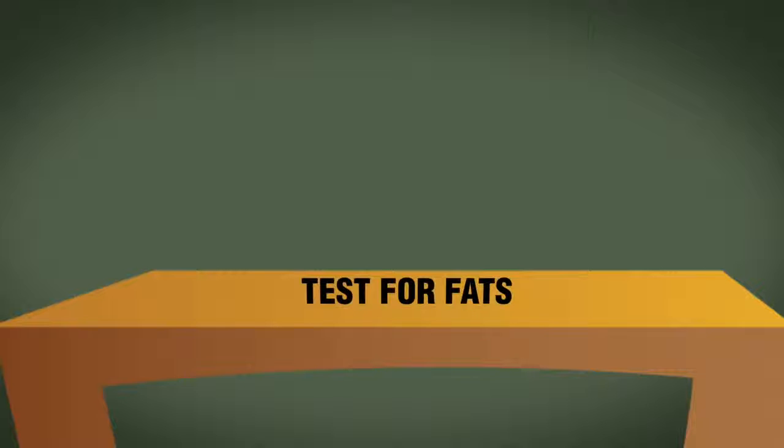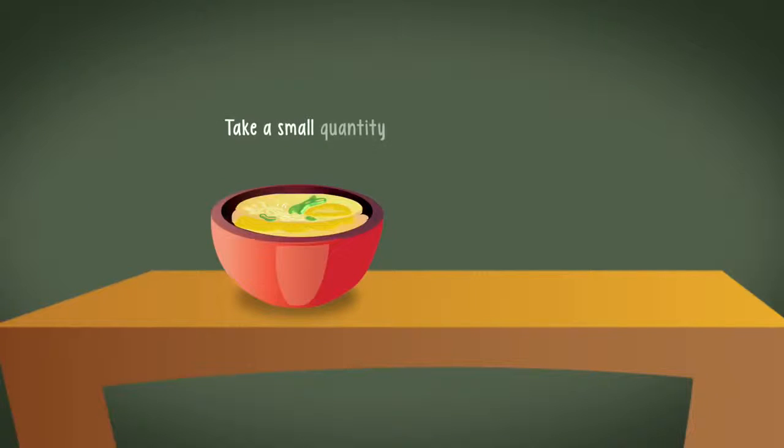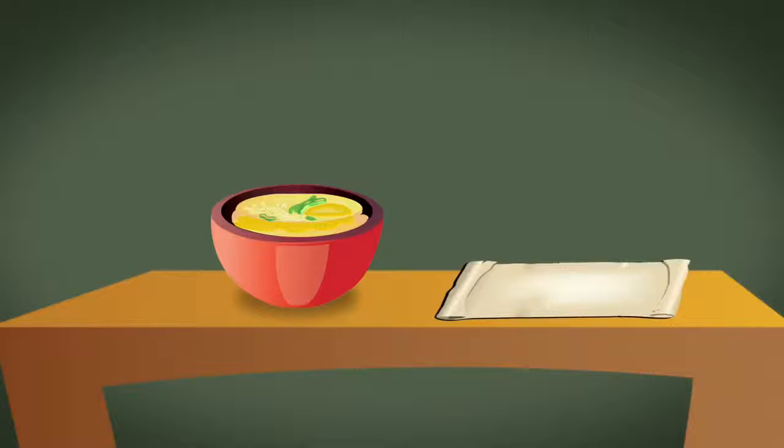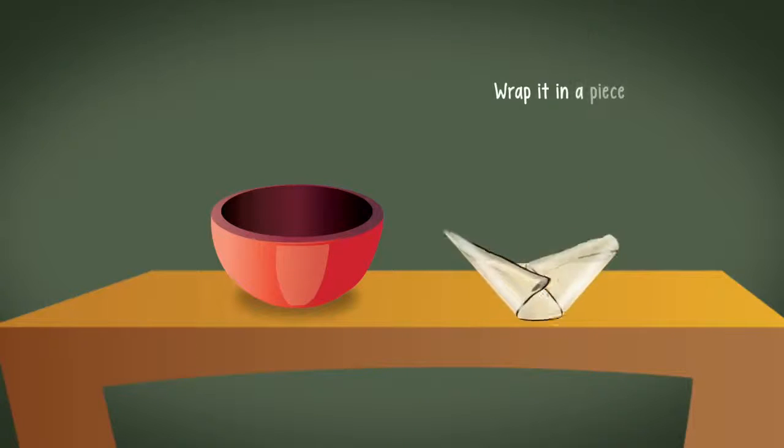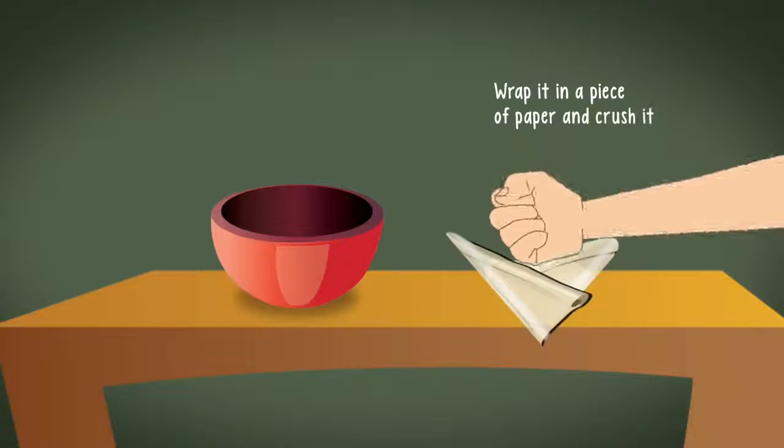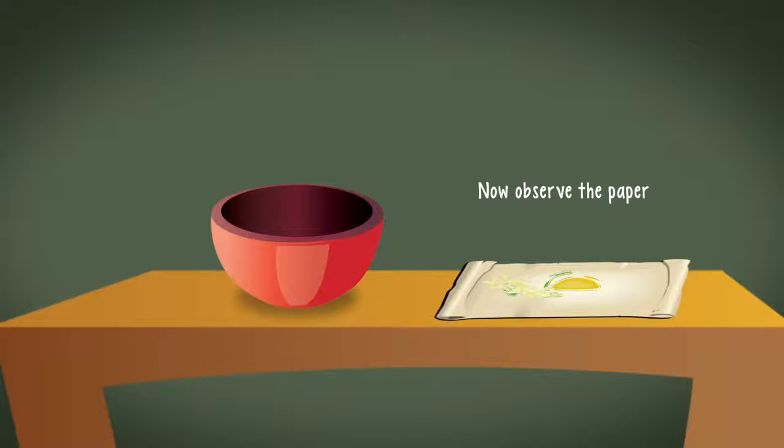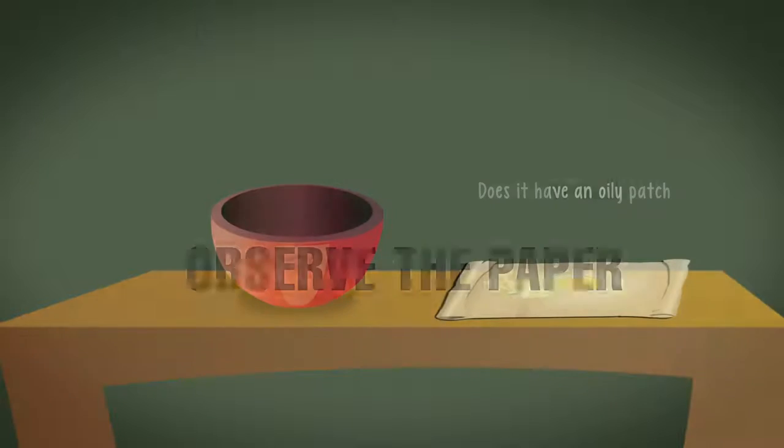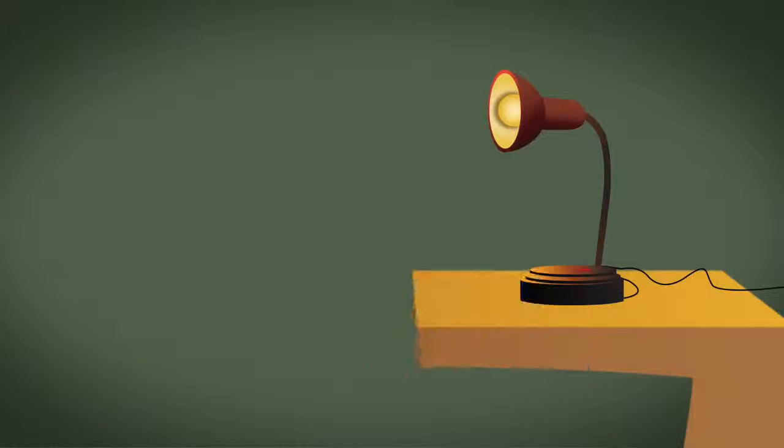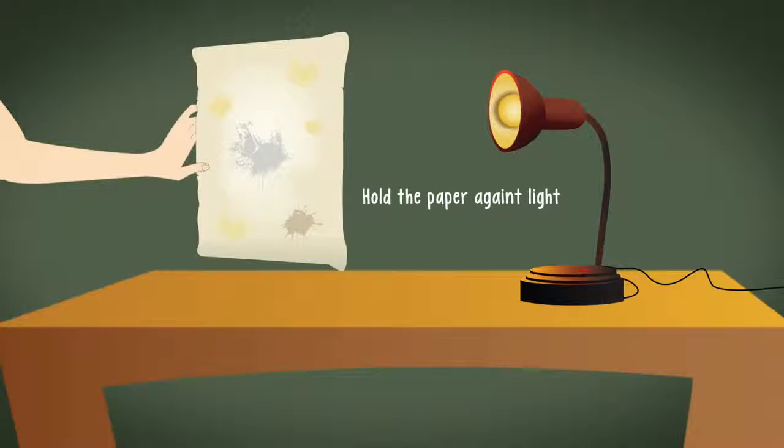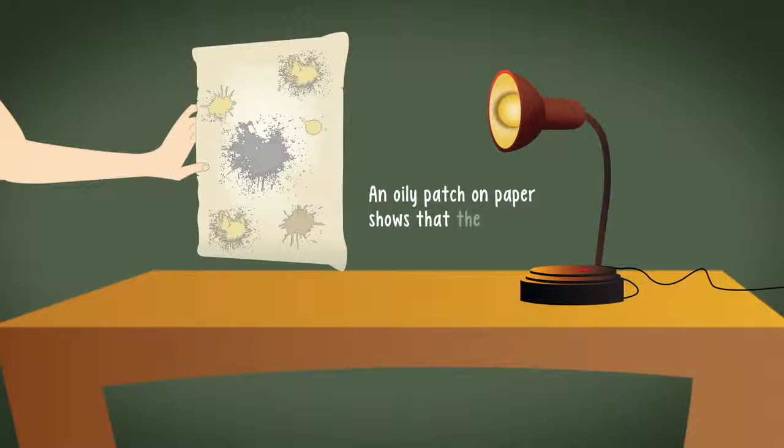Test for fats. Take a small quantity of a food item, wrap it in a piece of paper and crush it. Now observe the paper. Does it have an oily patch? Yes. Hold the paper against the light. An oily patch on paper shows that the food item contains fat.